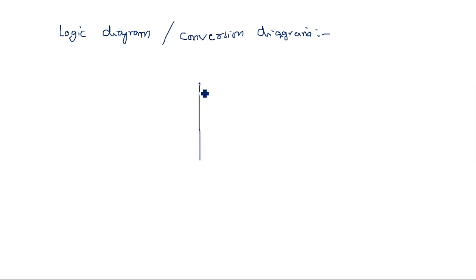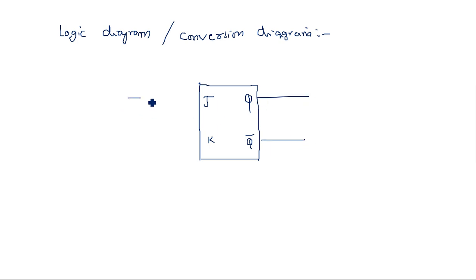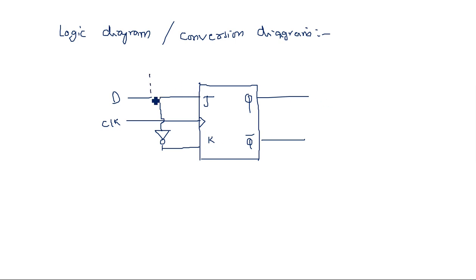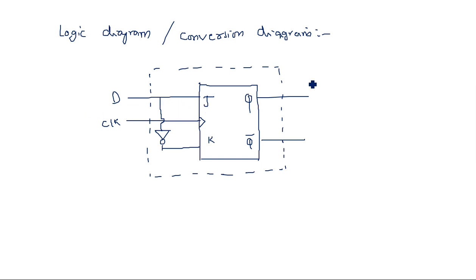Draw the JK flip-flop with terminals J, K, Q, Q̄ and a clock input. Connect external input D directly to J and also through an inverter to K. This is the internal circuit diagram of the D flip-flop derived from the JK flip-flop — by connecting an inverter between J and K and taking one input as D. This is the conversion diagram for the JK flip-flop to a D flip-flop.